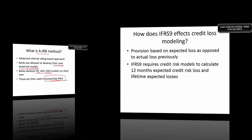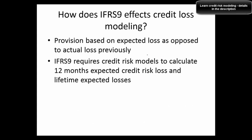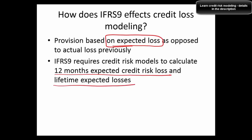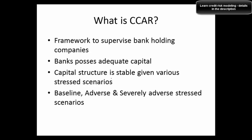These bank-developed models are then used for computing risk-weighted assets, instead of regulators directly providing numbers. How does IFRS 9 affect credit loss modeling? Initially, provisions were based on actual loss, but now IFRS 9 incorporates expected loss. IFRS 9 requires models to calculate 12-month expected credit loss and lifetime expected credit losses. This is the key shift — expected loss is now in the picture instead of actual loss used before IFRS 9 implementation.